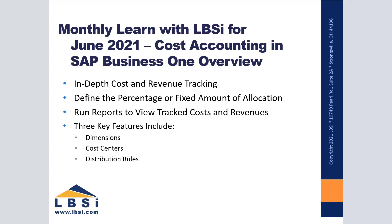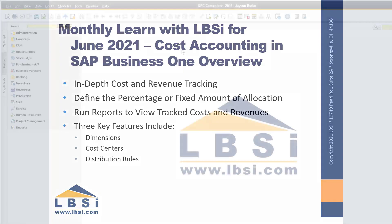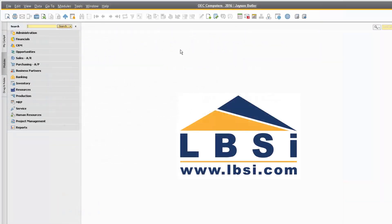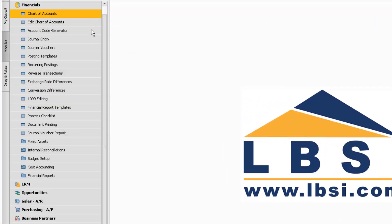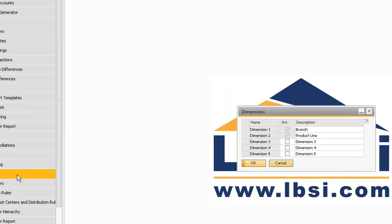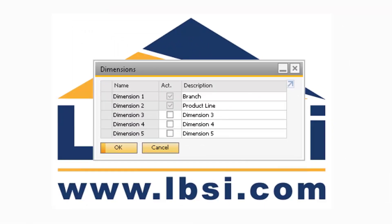The Cost Accounting feature within SAP Business One allows you to create various sets of cost centers and distribution rules. You can easily see reports that break down how the costs and revenues are broken up for each business process that is assigned to a distribution rule. Let's begin by navigating to Financials, Cost Accounting, Dimensions to review dimensions and how to create them.